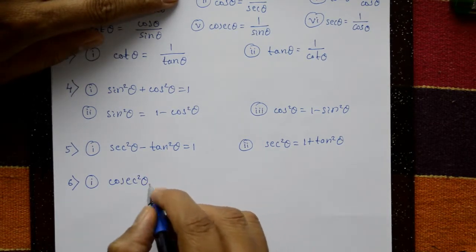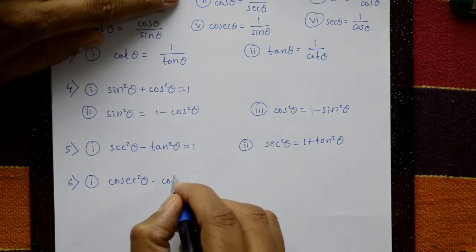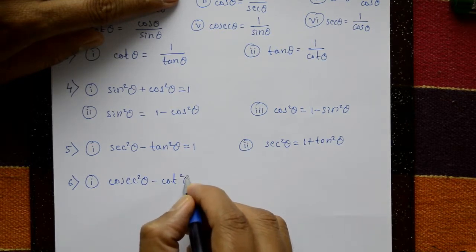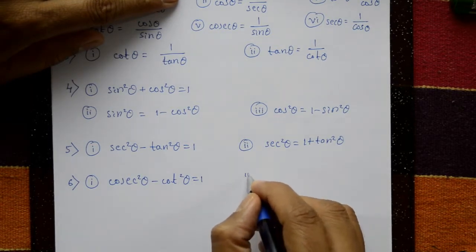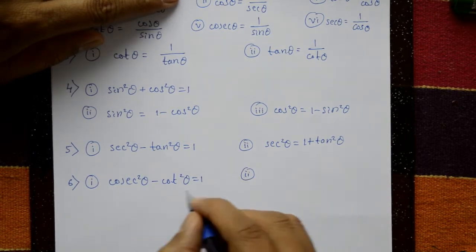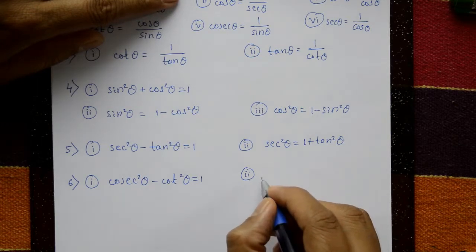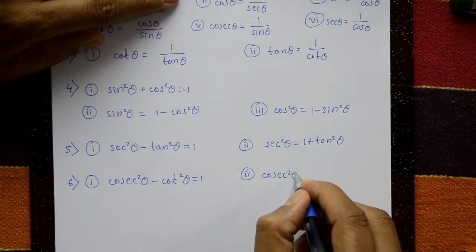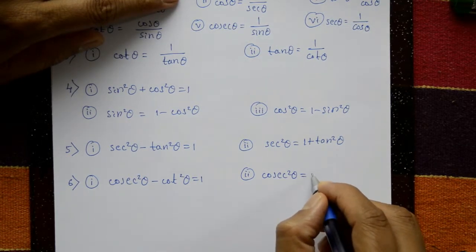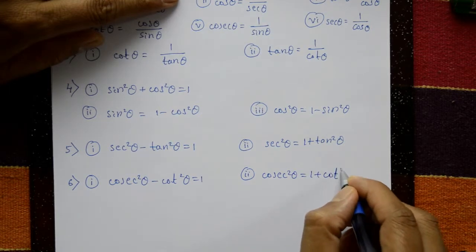Sixth identity: cosec square theta minus cot square theta is equal to one. And cosec square theta is equal to one plus cot square theta.